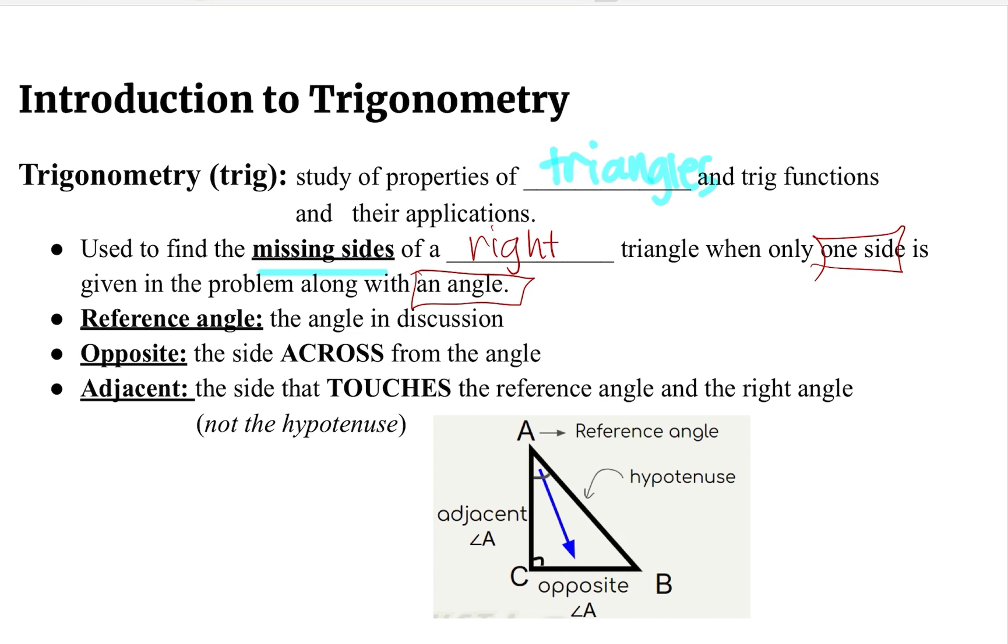Let us familiarize ourselves with some basic words that we need to be using as we go. One is reference angle. Reference angle is the angle in discussion. So if you take a look at the figure in the bottom, angle A is referred to as our reference angle. The next word is opposite. So opposite is the side across from the angle. So if we are talking about angle A is the reference angle, opposite to that angle is side or segment CB. So segment CB is opposite to angle A.